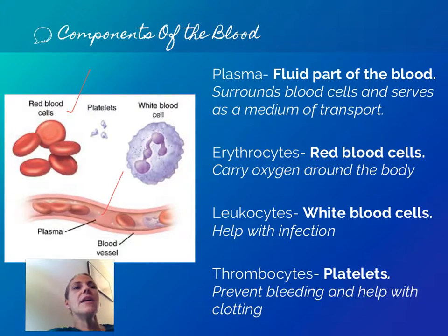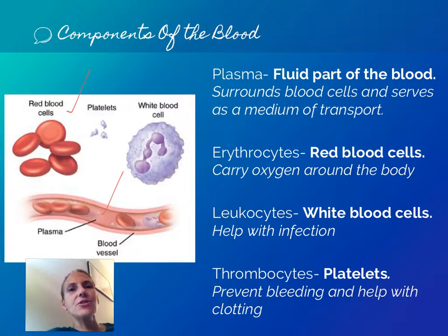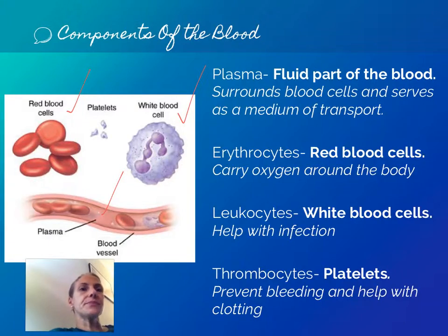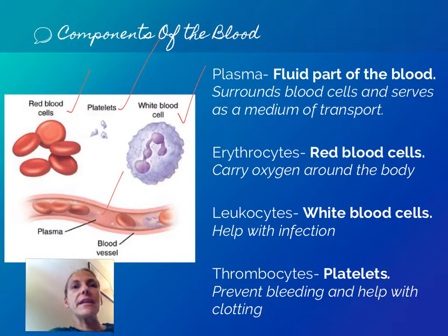We also talked about the cellular components. Erythrocytes make up 45 percent of blood — those are red blood cells, and they carry oxygen, about a billion oxygen molecules each. Leukocytes are your white blood cells, and we talked about five different types. We also have platelets, which are the thrombocytes — 'thromb' meaning clotting, so these are your clotting cells.